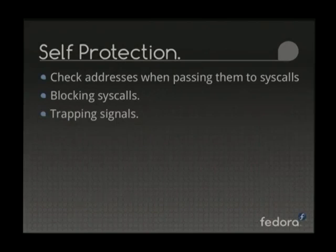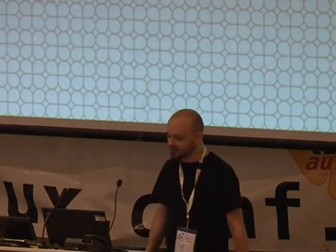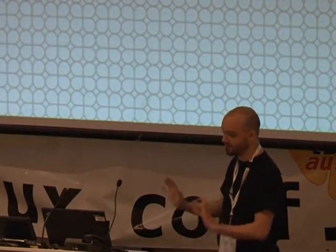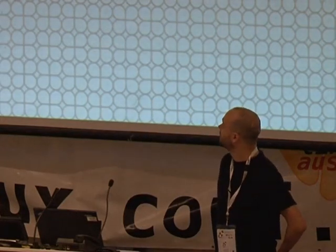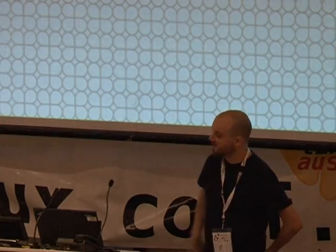Something else it needs to do is be very careful before calling system calls — making sure it's not doing anything that will harm itself, like munmapping the shared memory map between the children, or anything that could corrupt its own state. There are a bunch of self-checks before each syscall to ensure addresses are not in certain ranges. We also trap a bunch of signals to make sure they don't confuse the children.